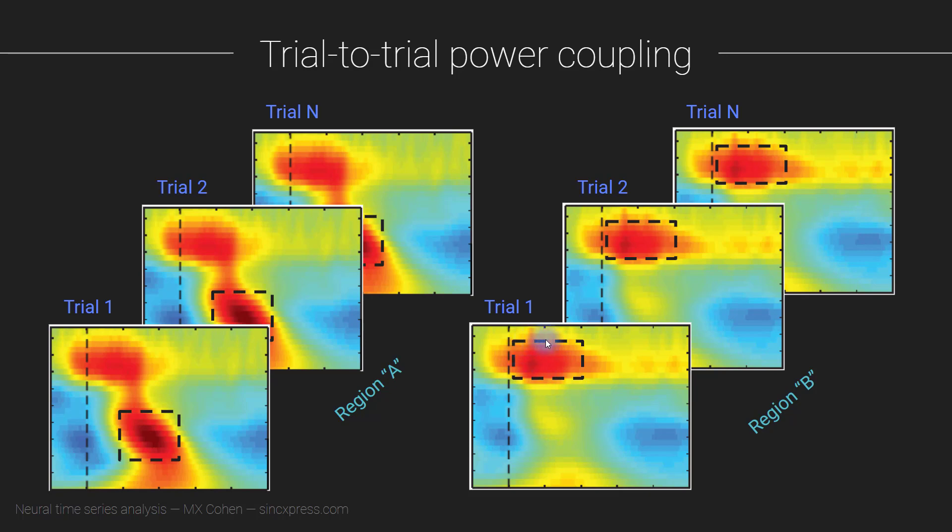So you can say that early—let's say this is the gamma band—that early gamma band activity in posterior cortex is correlated with later lower-frequency theta activity in the prefrontal cortex. So that is just an example of the kind of interpretation you can make from this sort of analysis approach.